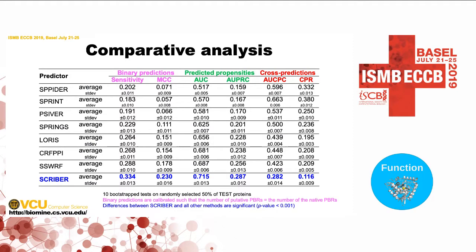This big table shows comparison of our model, at the bottom, with the other models, broken down on three aspects. The aspect in pink is the binary prediction — a crisp prediction of protein binding residues done at the correct rate of prediction. Our sensitivity is a little bit higher. The green part assesses propensities for protein binding using standard AUC and also area under a precision-recall curve — results are a little bit better. The big improvement is in the cross-prediction rate. We cross-predict about 11% of residues compared to about 34% of correct predictions, so the balancing is much better than any other model.